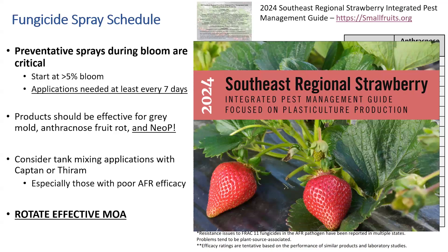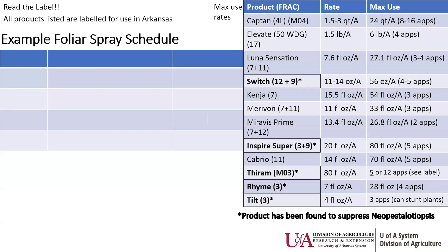I really want to plug the 2024 Southeast Regional Strawberry Guide — by the time you see this, the 2025 one may be out — go to smallfruits.org. On the right, I'm showing you a list of fungicides to potentially include in your spray schedule. Everything bolded with an asterisk is effective for helping to suppress Neopestalotiopsis: Switch, Inspire Super, Thiram, Rhyme, and Tilt. Functionally we have Group 3s and Group 9s, and our multi-site MO3 which is Thiram. Rhyme and Tilt are our true Group 3s, and we have our combos Inspire Super and Switch. Save Switch as a rotation partner for anthracnose and Botrytis, but also utilize it as an effective spray for Neop week to week — it's been found to be really good by itself, but you only get four to five applications.